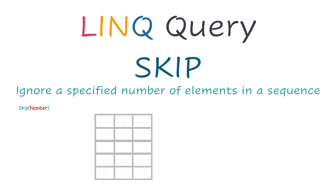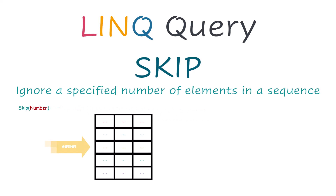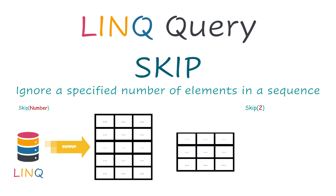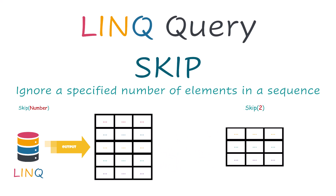For example, if we have a data table as output from a query which contains 5 rows, and I want to get all rows except the first 2 rows, I can use this function with the number 2 to get all rows from the result table except the first 2 rows.